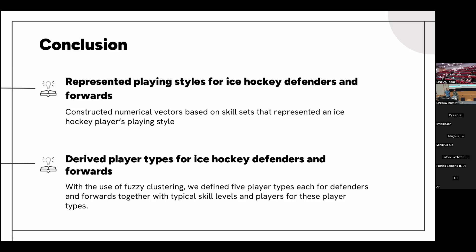Every league has a different level of competition and different play styles. When you standardize the numbers, does that take the different leagues into consideration? And if not, do you think the different play styles from different leagues affect the clustering results? We didn't take it into consideration during standardization — probably a bit. We saw that the top players in some clusters were all from one league, so the style of play in that league may affect the cluster. We wanted to capture an overall player type, so we didn't adjust for league differences.